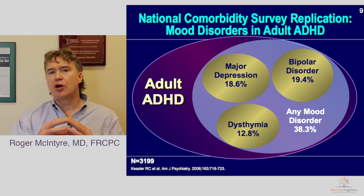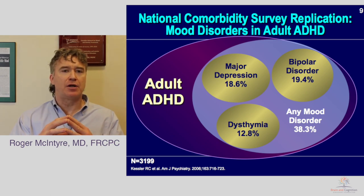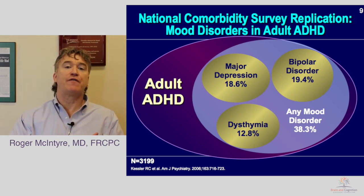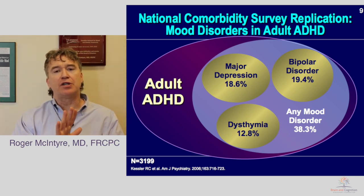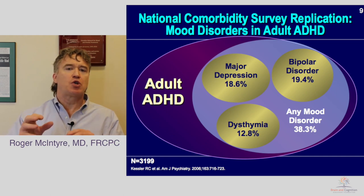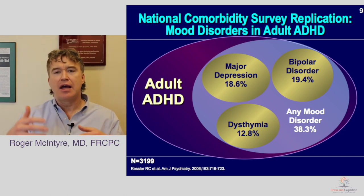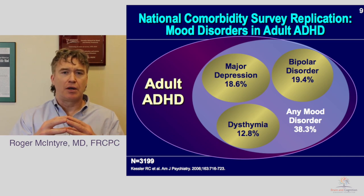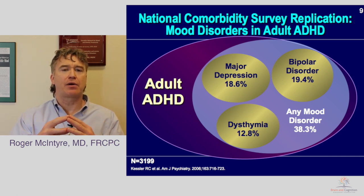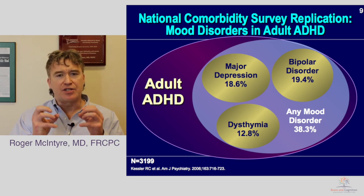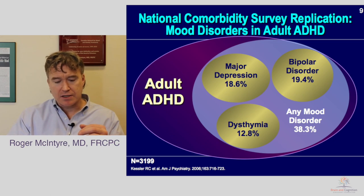There's a notion called heterotypic continuity versus homotypic continuity. Homotypic continuity is when the phenotype remains the same across time. Heterotypic continuity is when the condition changes across time. For example, many patients will tell us they had ADHD as a child and then, as an adult, they have bipolar. Is this comorbidity, or an example of heterotypic continuity — the same vulnerability manifesting differently phenotypically across time?